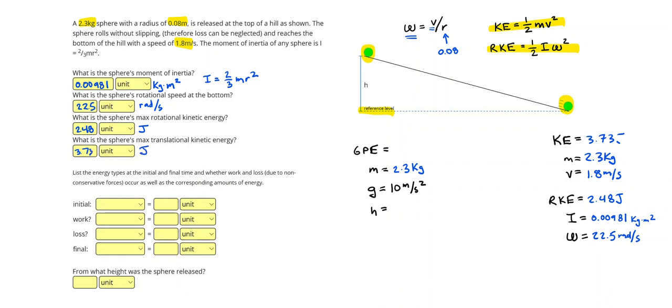Alright, so let's go ahead and start answering this part. So initially, we had gravitational potential energy due to the elevation. And since the ball was just released, it wasn't pushed by anything. There's not going to be any work done by external forces. So we're going to put none. It told us we can neglect the loss. So we can put none and zero joules for both of these. And then at the final time, we have KE and RKE, because the ball is moving down the ramp and is also spinning. Units, of course, will be joules for all of the energies.